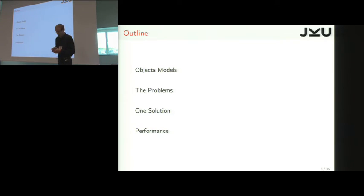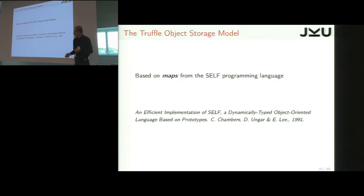So first, I'll introduce a bit more about what object models we use. Then I'll expose the problems in a bit more detail. I'll present the solution and the impact on performance. This kind of dynamic objects we have in these dynamic languages, we could represent them just with a hash table, but that would be horribly inefficient.